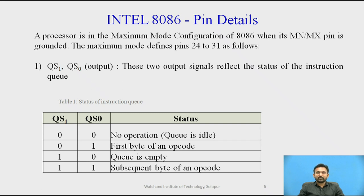The first pins are QS1 and QS0. These two output signals reflect the status of the instruction queue. The status indicates the activity in the queue during the previous clock cycle. There are 4 possible signals: 00 means no operation and the queue is idle; 01 means the first byte of an opcode; 10 indicates the queue is empty; and 11 means a subsequent byte of an opcode.